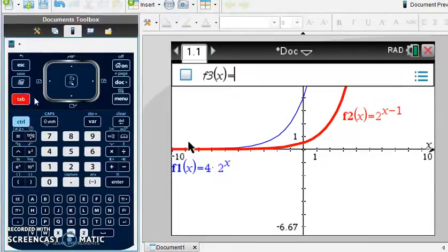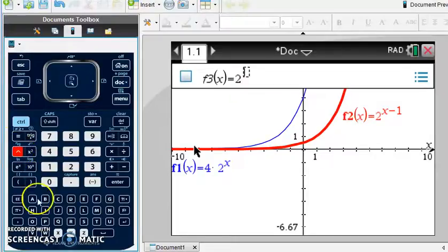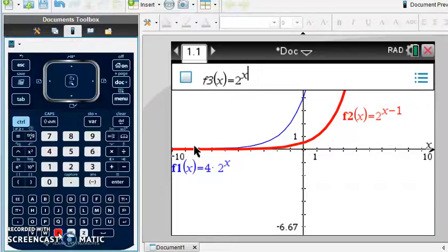However, if I need to do 2 to the power of x, and then a minus 1, that's not an exponent, I need to arrow over so that my cursor leaves that little exponent frame and comes down below, then I could have minus 1.